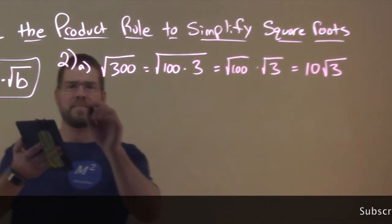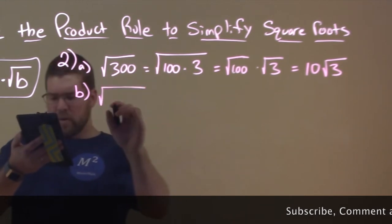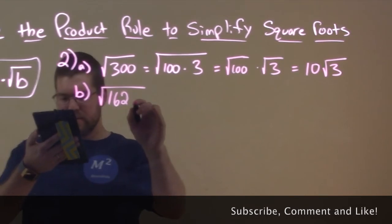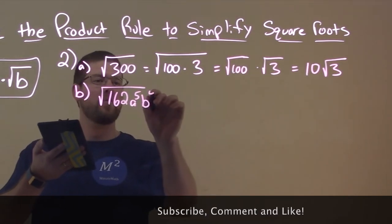Let's do another problem, a little more difficult. Part B: the square root of 162 A to the 5th power B to the 4th power.